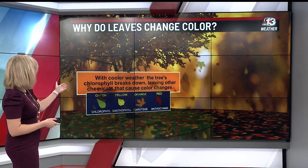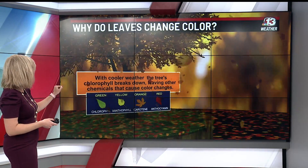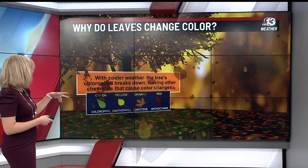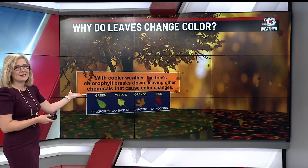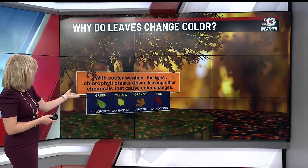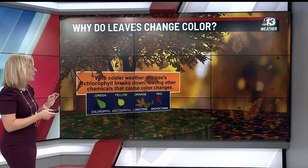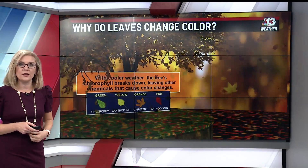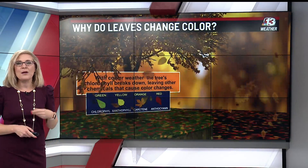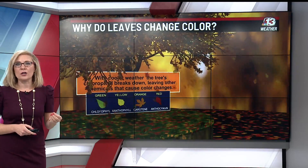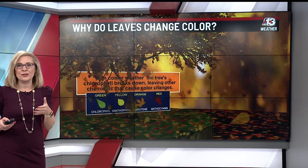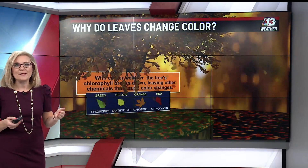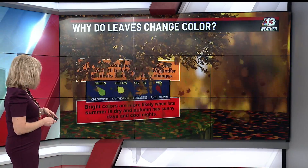Different leaves have other chemicals in them that indicate different colors. For example, you have the green, the yellow, the orange, and the red. The chlorophyll causes the green; the yellow leaves contain carotene; and the orange leaves as well — it just depends on what chemical other than chlorophyll the leaves have in them. Certain types of trees are prone to certain types of colors.